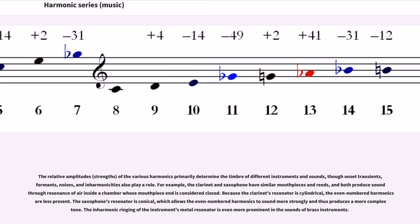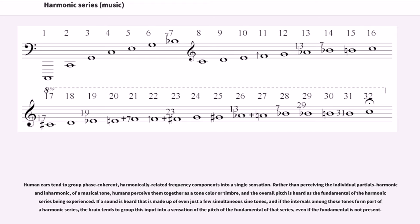The relative amplitudes or strengths of the various harmonics primarily determine the timbre of different instruments and sounds, though onset transients, formants, noises, and inharmonicities also play a role. For example, the clarinet and saxophone have similar mouthpieces and reeds, and both produce sound through resonance of air inside a chamber whose mouthpiece end is considered closed. Because the clarinet's resonator is cylindrical, the even-numbered harmonics are less present. The saxophone's resonator is conical, which allows the even-numbered harmonics to sound more strongly and thus produces a more complex tone. The inharmonic ringing of the instrument's metal resonator is even more prominent in the sounds of brass instruments.